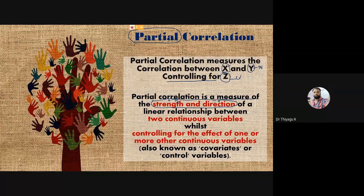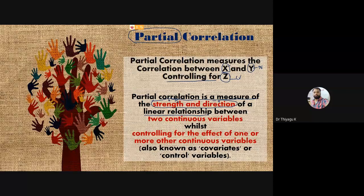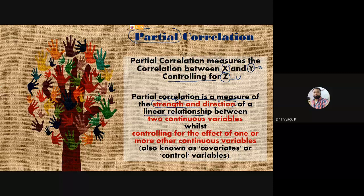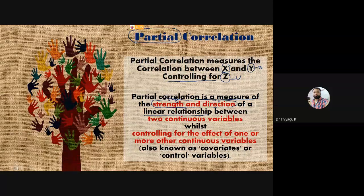Partial correlation measures both strength and direction, similar to Pearson product-moment correlation, but here it checks for a linear relationship. The main condition for using partial correlation is two continuous variables while controlling the effect of one or more continuous variables. At minimum, we need three variables: X as the independent variable, Y as the dependent variable, and Z as the controlling or confounding variable, and all three must be continuous in nature.